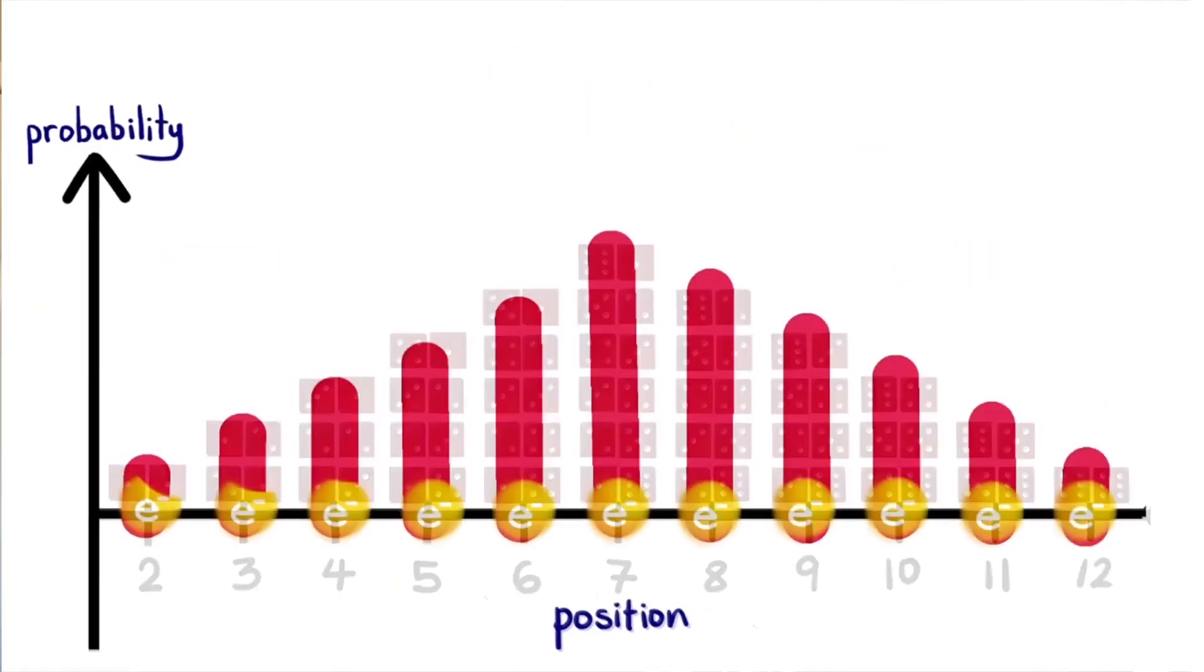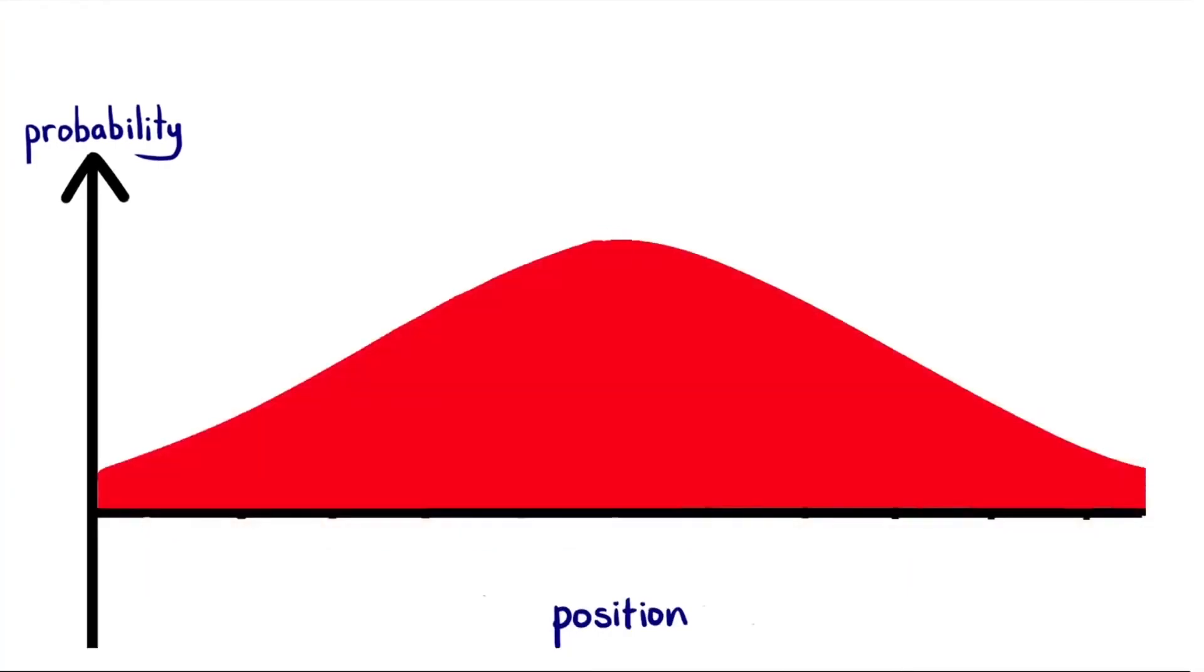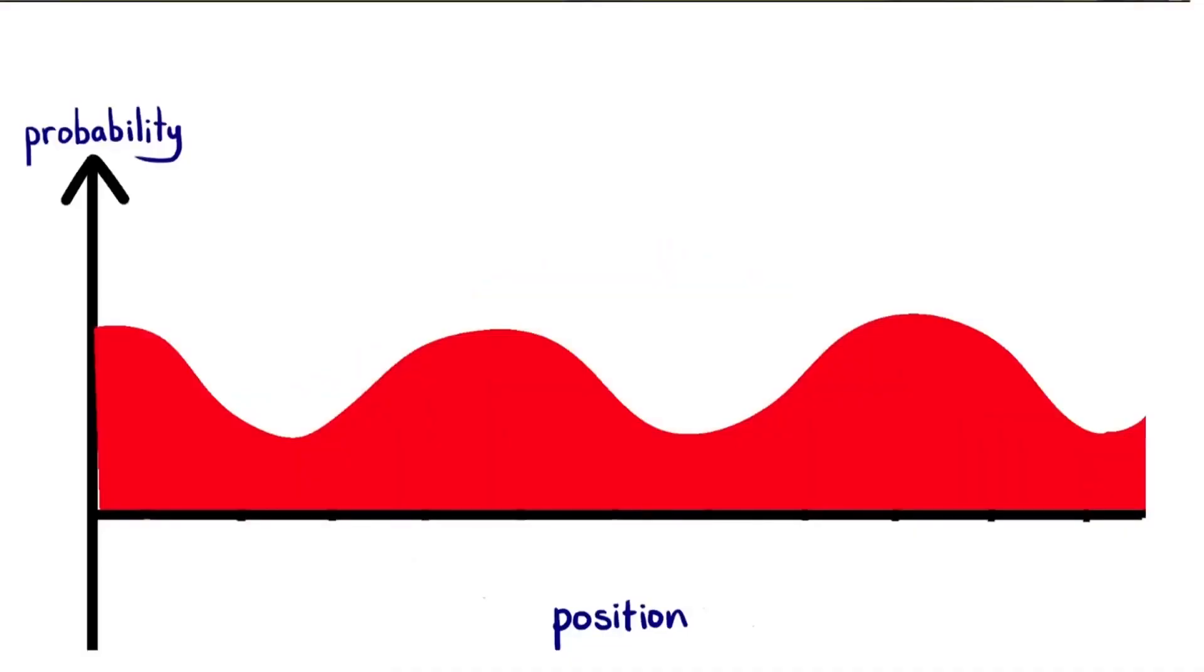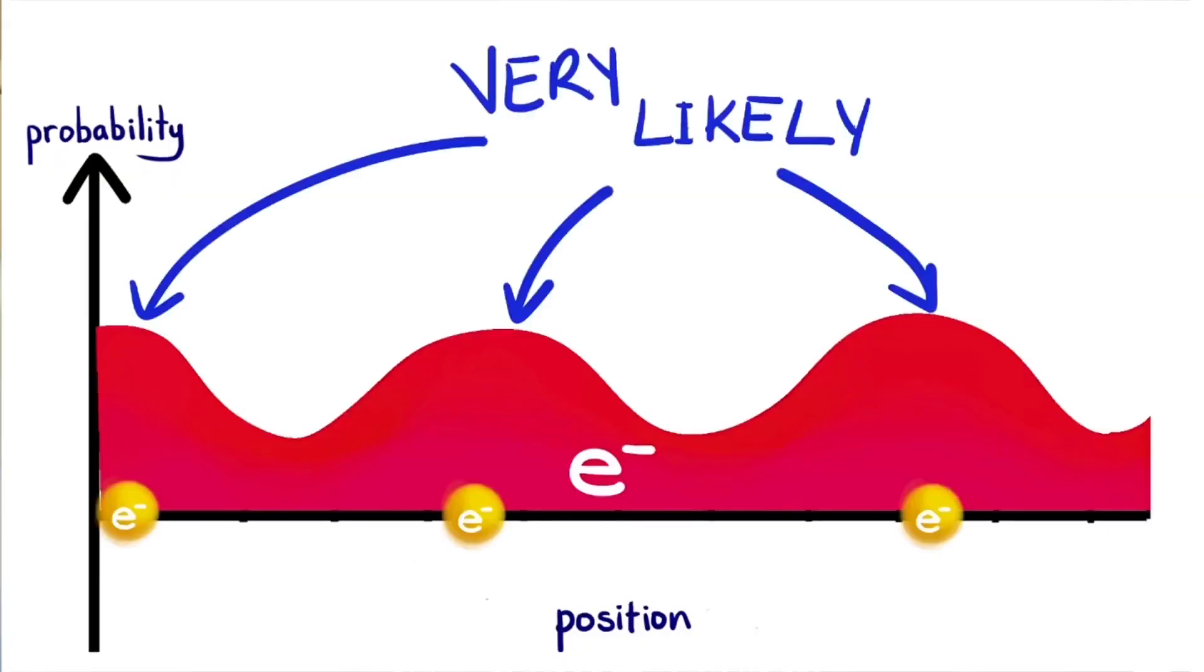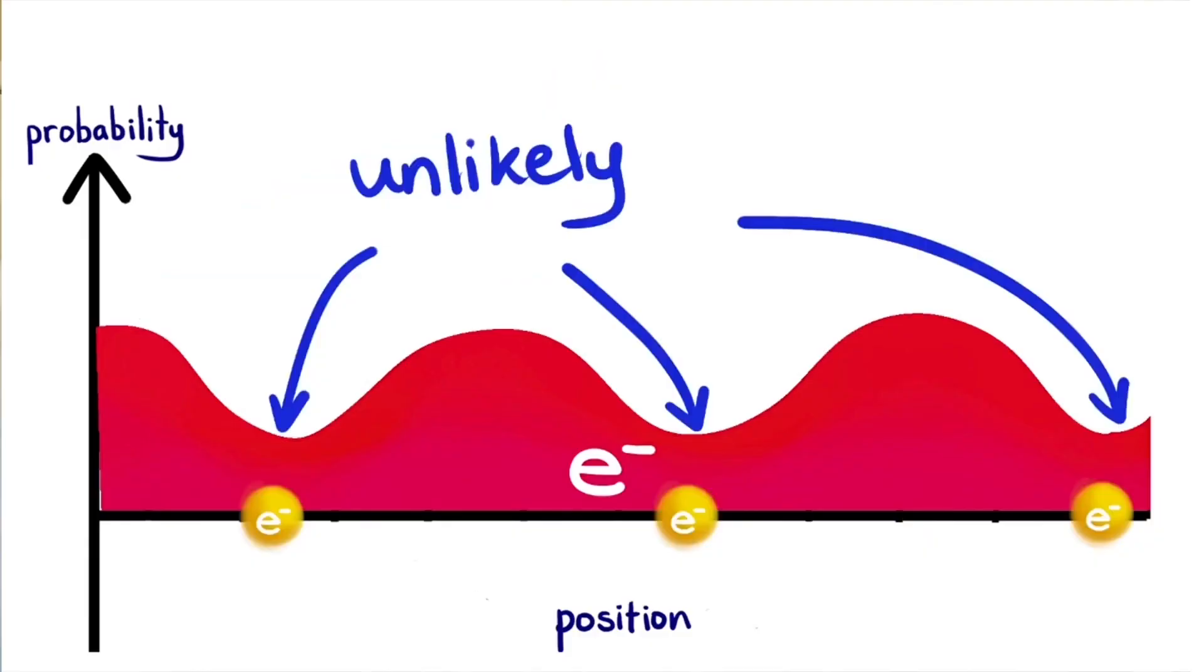In reality, though, the electron can be in more than just ten spots, since there are many more combinations than just two dice. Now, we can picture subatomic particles as this, a probability wave. This wave will tell us the odds of finding a particle at that location. Say this is our electron's probability wave. The peaks of the wave is where we're most likely to find the electron, and in the valleys, it's less likely we find it there.